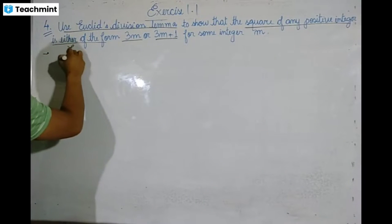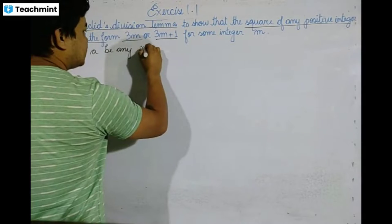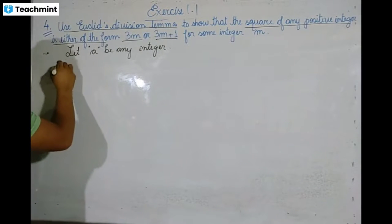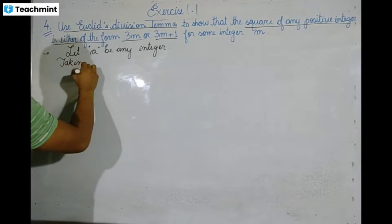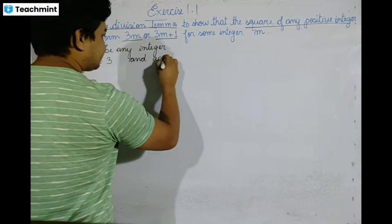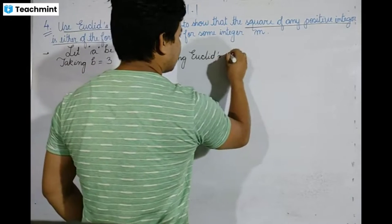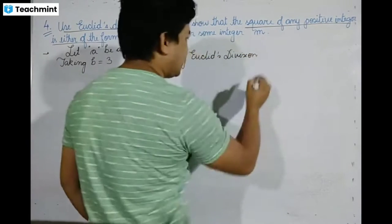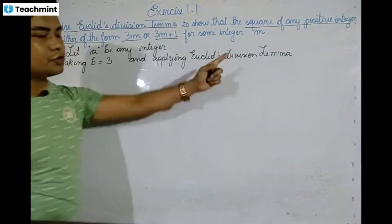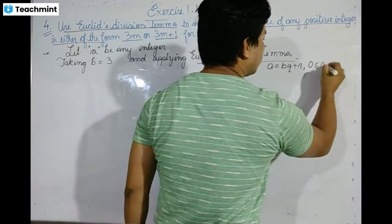Let A be any positive integer. We take A and B equal to 3, and apply Euclid's Division Lemma. Euclid's Division Lemma states A is equal to BQ plus R, where 0 is less than or equal to R, which is less than B.